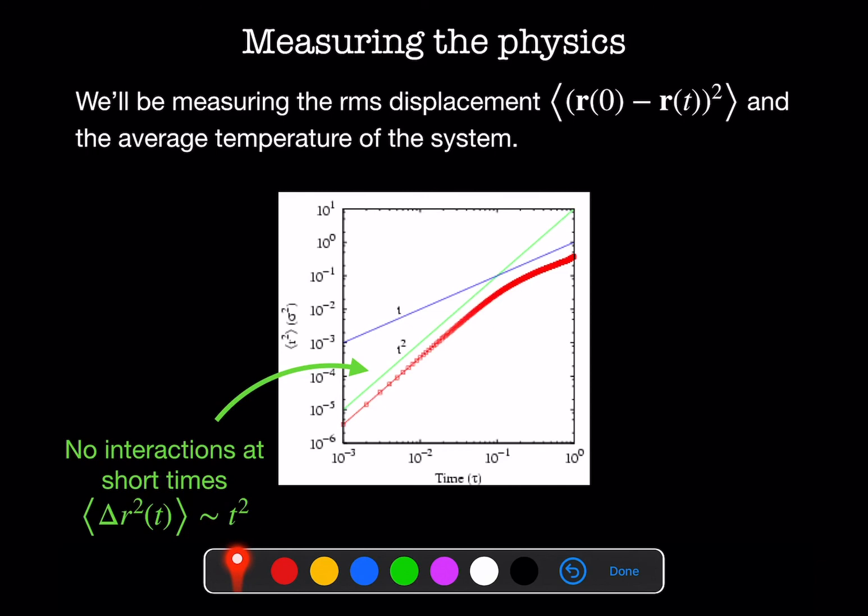At long times, particles will start to feel each other and this will happen through collisions. So once a particle gets close enough to another particle, it's going to use conservation of momentum and basically scatter off of it. And the idea is that these collisions can come from any direction. So an incoming particle has an equal probability of being scattered in any direction from any given collision. What this does is it changes the mean squared displacement so that at long times, it scales as t. So basically, what we've discovered here is that adding these interactions to a gas of particles, we give rise to diffusion. So this characteristic mean squared displacement that scales with time is exactly the law of diffusion.